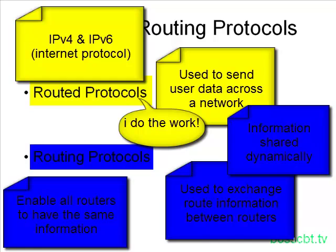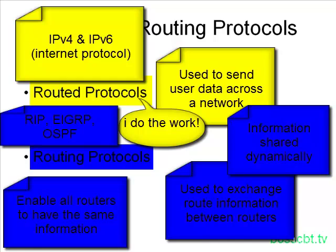Some examples of routing protocols are RIP, RIP version 2, EIGRP, and OSPF. Those are some of the more popular routing protocols used on networks to exchange routing information. And that's really it — those are the two concepts: routed protocols and routing protocols. To summarize: routed protocols do the work — think IP. Routing protocols exchange information, and examples of them would be RIP and OSPF.